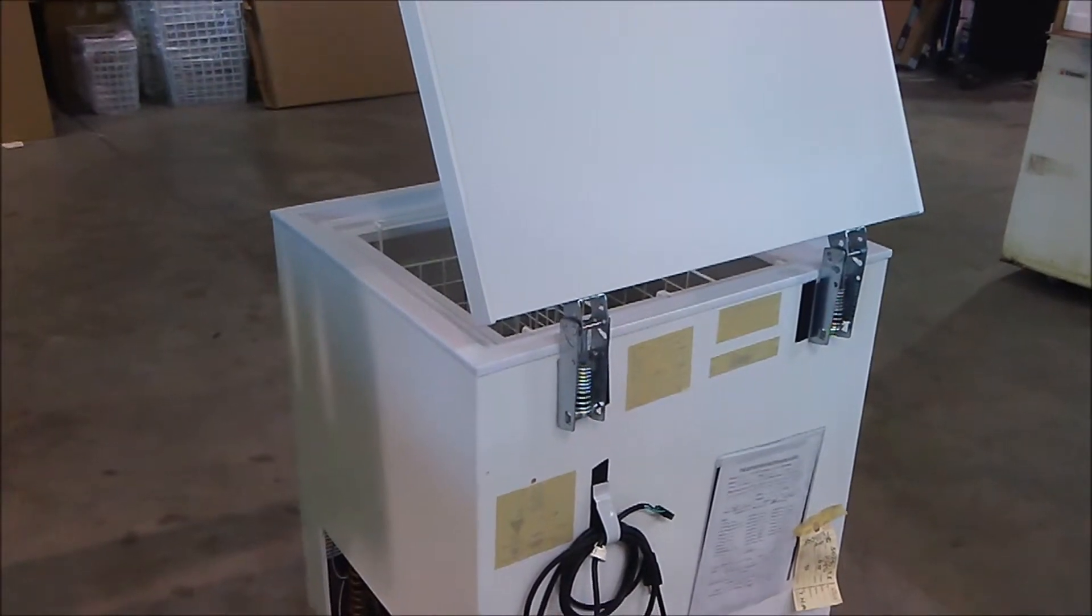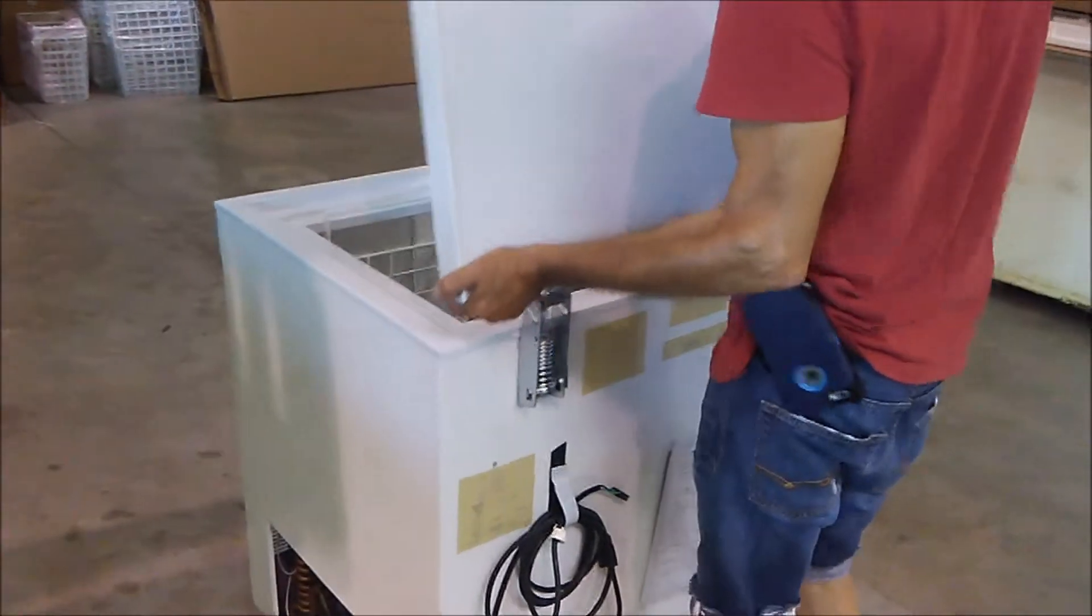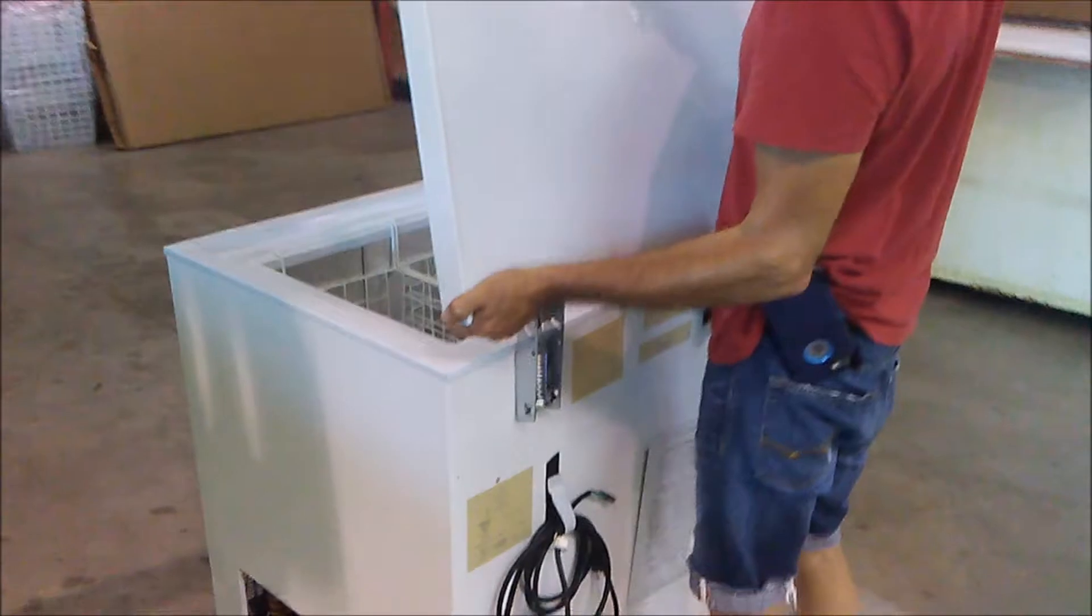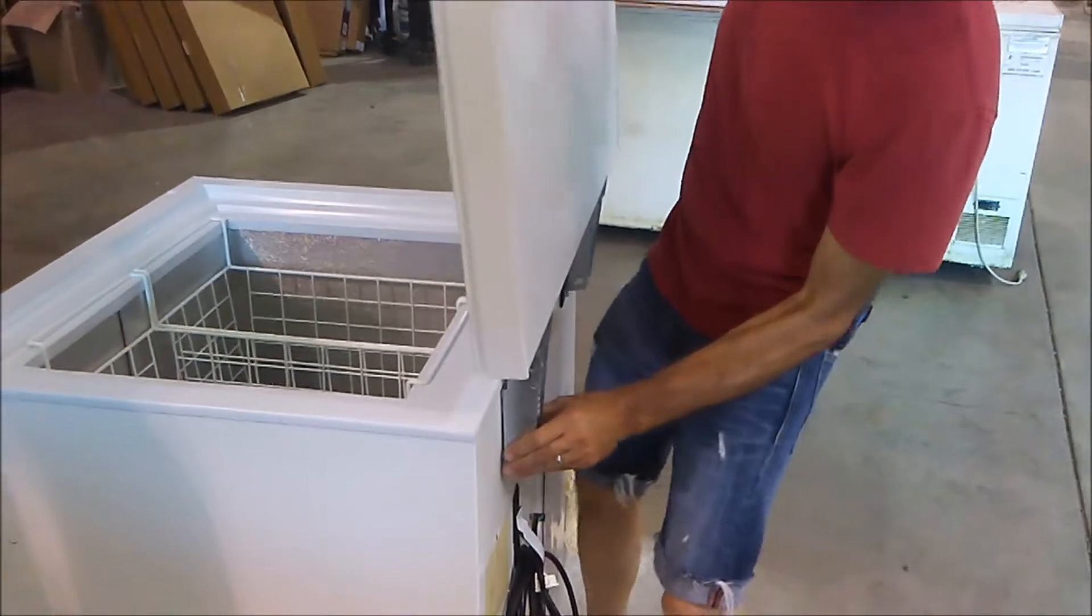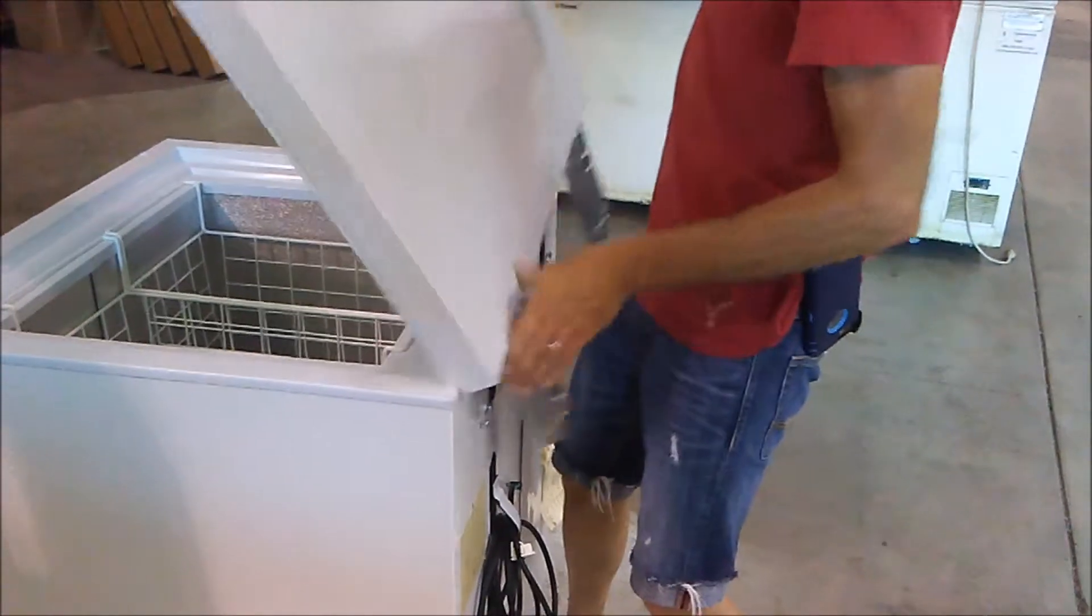We can now remove the lid from our freezer. To do this, grip the lid firmly and pull up on it, and also pull away from the back of the freezer. It may require a little bit of wiggling in order to get it to come free, but it will.